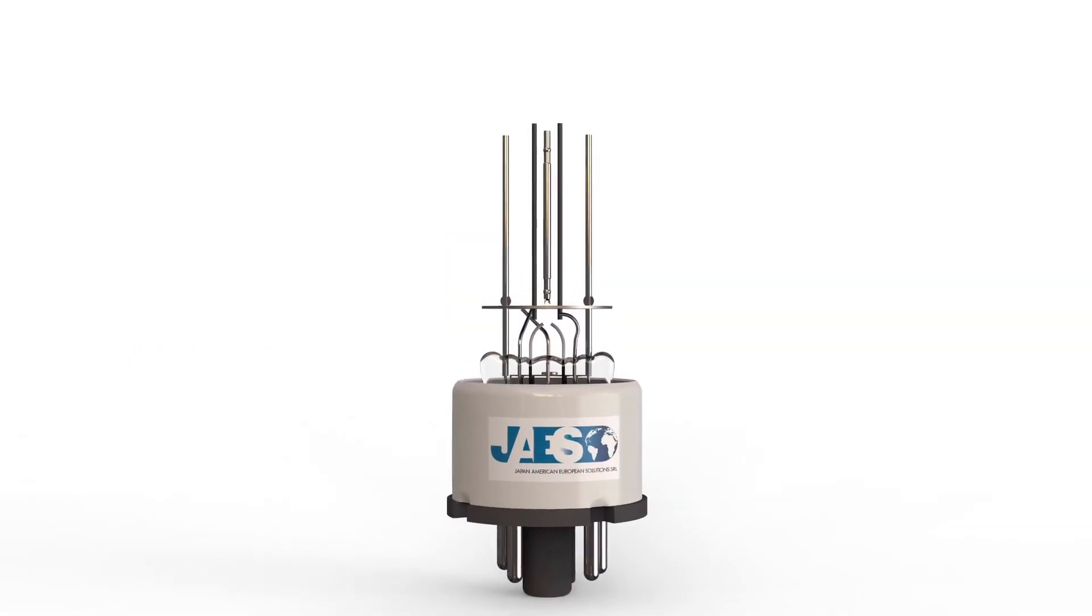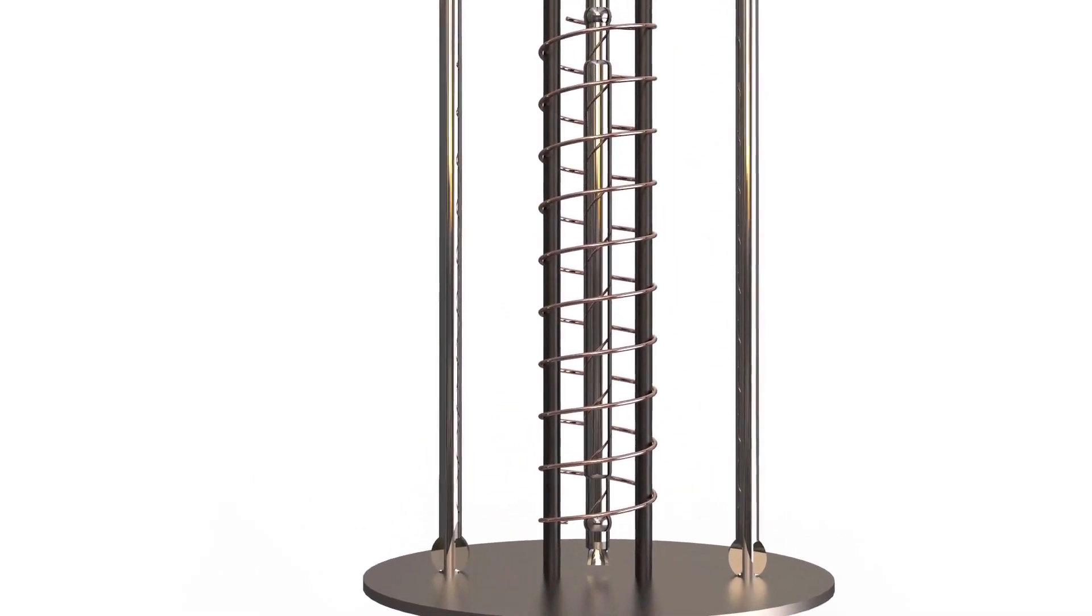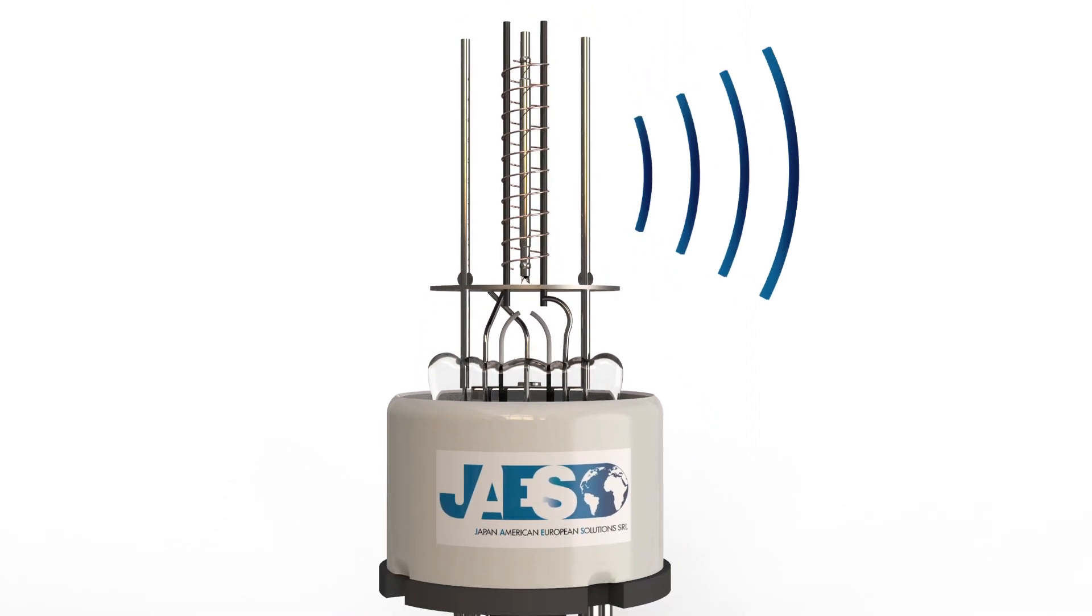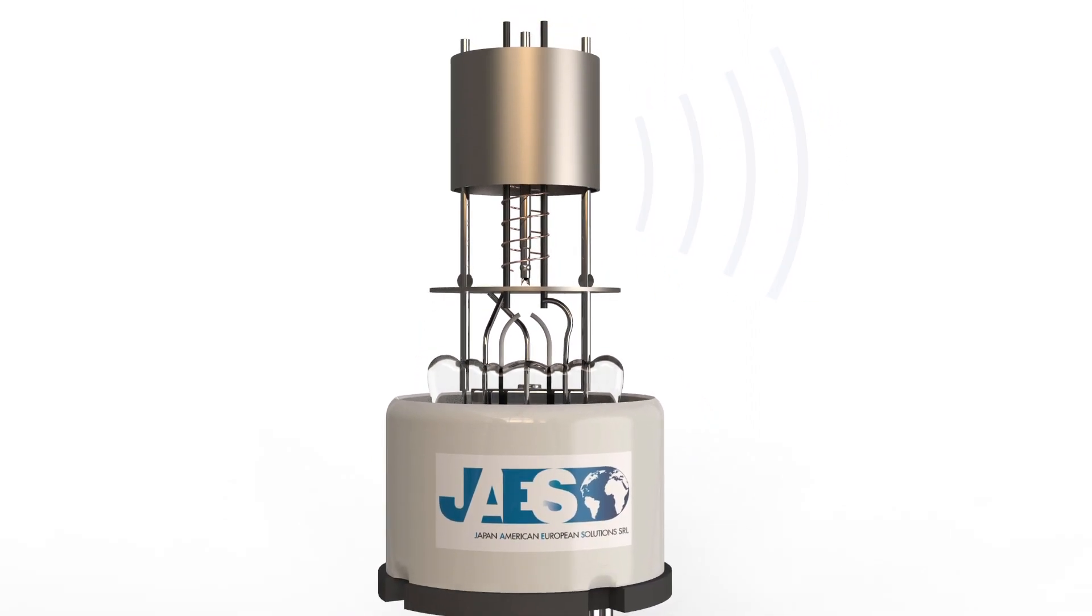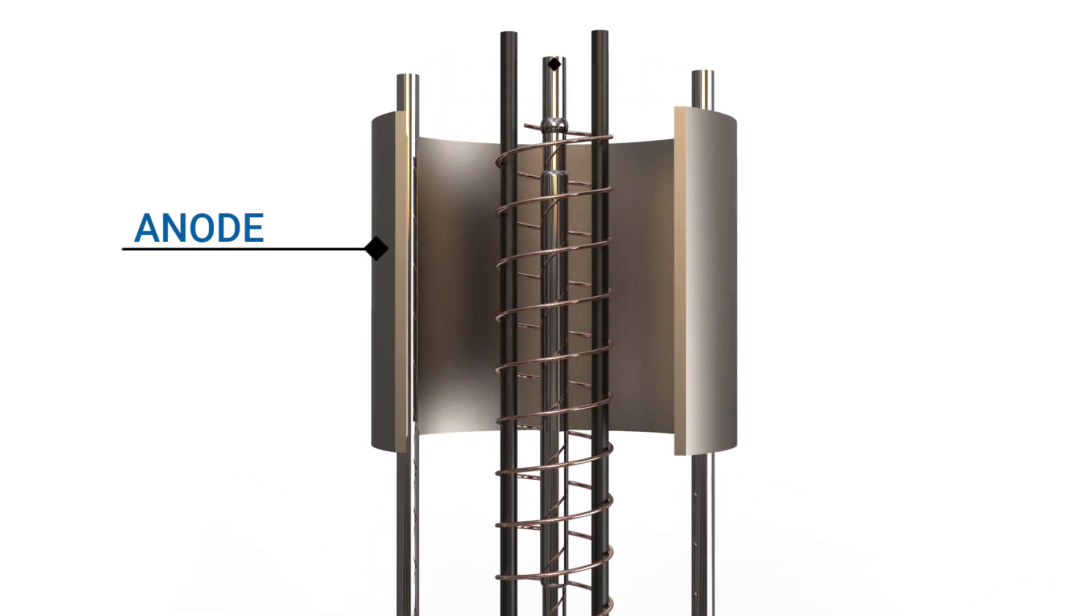In this type of triode, the grid usually consists of a cylindrical screen or helix of fine wire surrounded by, never touching, the cathode. The grid acts like a gate for the electrons, controlling the current flow and thus allowing signal amplification. Around the grid is placed the anode, which receives the electrons emitted by the cathode.